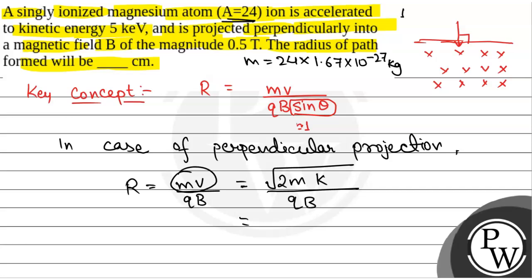Because 1 atomic unit, 1 amu, is equal to 1.67 into 10 to the power minus 27 kg. This is the value of 1 atomic unit. So this will be the mass of the particle.